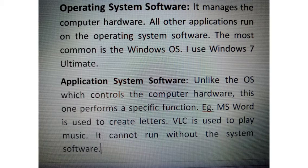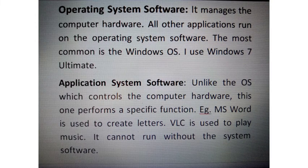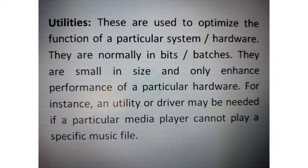Moving to software: the two main forms are the operating system software and application software. The operating system software is like the soul of the computer — it manages the hardware and other applications that run on the computer. Without the operating system software, the computer cannot function, because it runs the hardware and runs the computer.